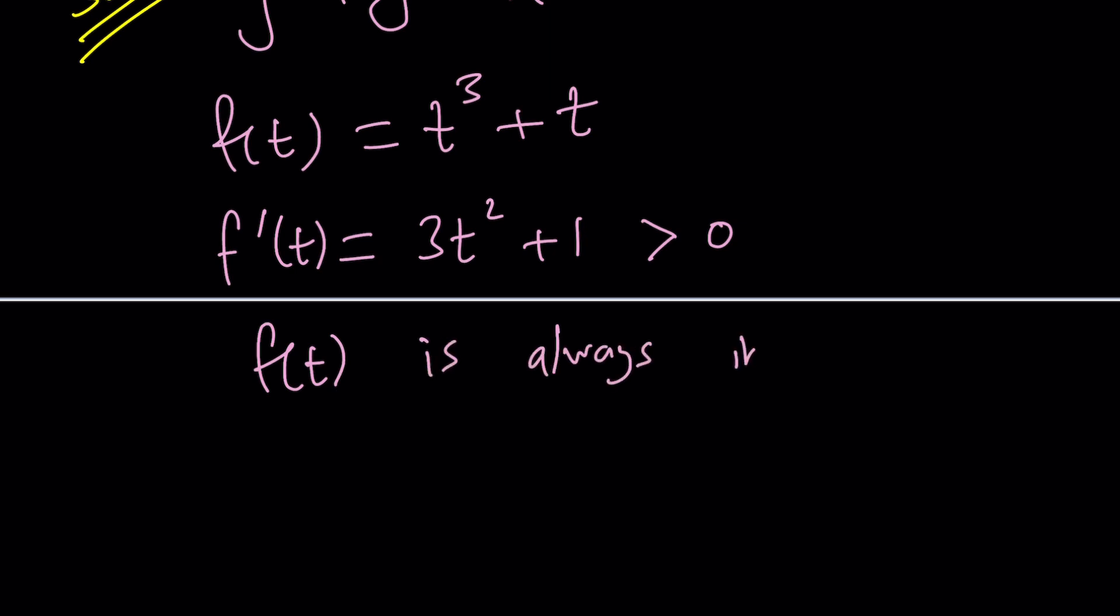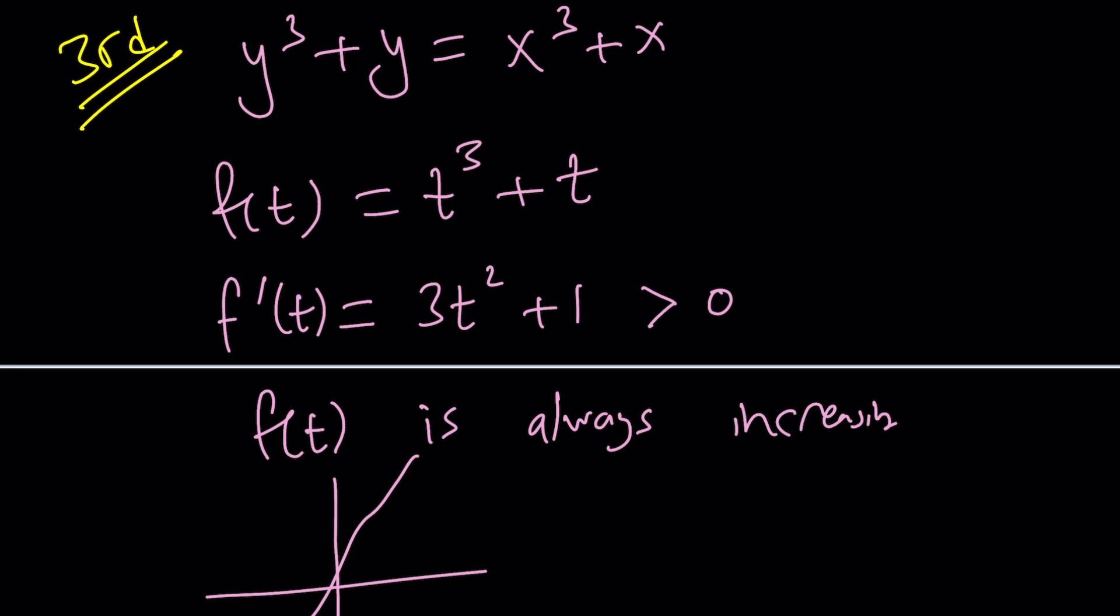What does that mean though? It means that our function is always going to go up. So, if you consider something like f of y equals f of x, which is what it is, that means that y equals x. Because f is bijective. Wait a minute. That's not true. I mean, it is true, but f is injective. That's what I was trying to say.